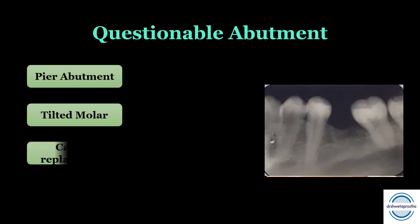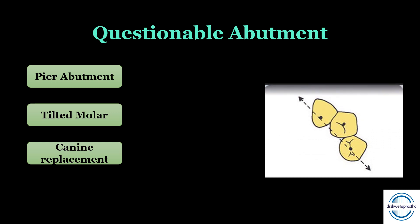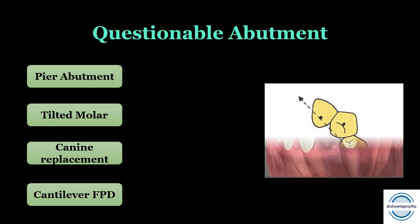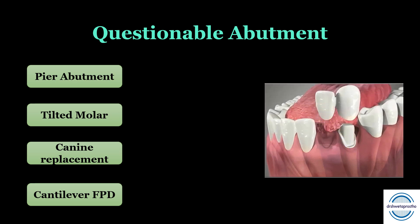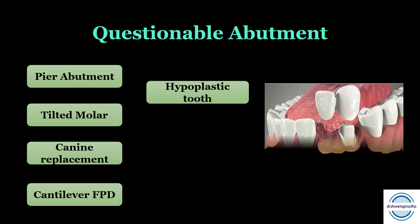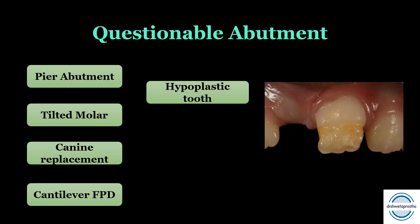Coming to canine replacement — it is considered a difficult fixed partial denture because the canine often lies outside the inter-abutment axis, creating a challenge. Then comes the cantilever FPD, which has one or more abutments at one end of the bridge while the other end is unsupported, as we can see in the image. Next are the hypoplastic teeth, where enamel hypoplasia — when the enamel is not formed properly — also creates a challenge.